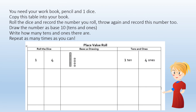Today you will need your workbook, your pencil and a dice. If you don't have a dice, get some small pieces of paper and write the numbers 1 to 9. Copy this table into your book — you can ask a grown-up to help you if you would like. Roll the dice and record the number you roll in the first box. Repeat and roll again and write this in the second box. If you don't have a dice, choose two numbers and write these in the boxes instead. You then need to draw the number as base 10 using tens and ones. Remember, the first number you roll is the tens number and the second is the ones. You then need to write how many tens and ones there are in your number. Repeat it as many times as you can.